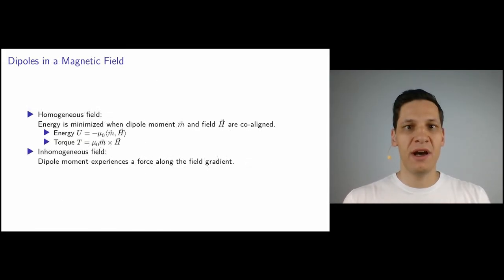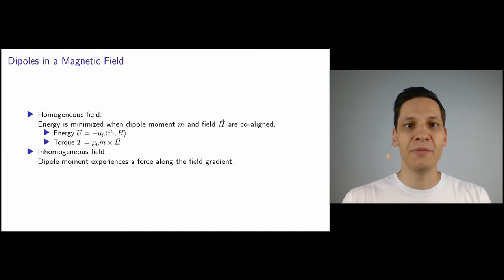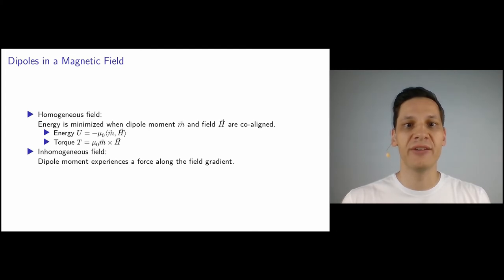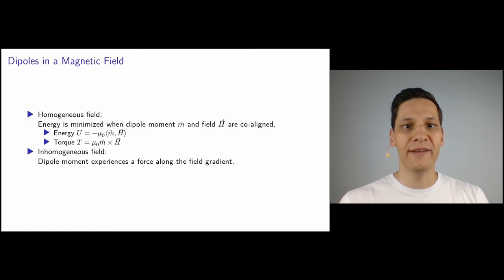Now we have discussed how dipolar particles interact amongst each other via dipole-dipole interactions. Of course a dipolar particle will also interact with an external magnetic field. In a homogeneous field, the energy is minimized when the dipole moment of the particle is co-aligned with the magnetic field, and the energy contribution is given by minus the vacuum permeability times the dot product of the magnetic moment and the field. If the particle is not co-aligned with the field, it feels a torque proportional to the cross-product between the magnetic moment and the field, which acts to align the magnetic moment with the field. In an inhomogeneous field, the dipole moment experiences a force along the field gradient.